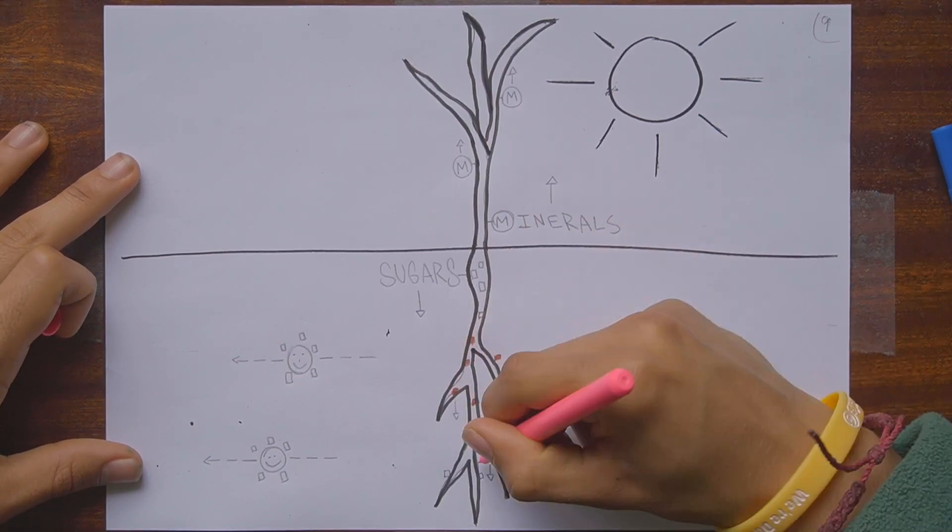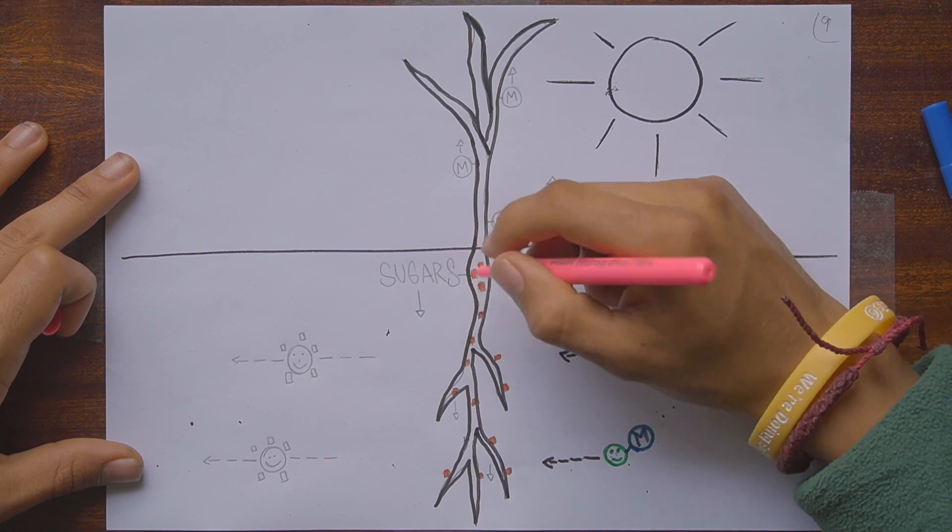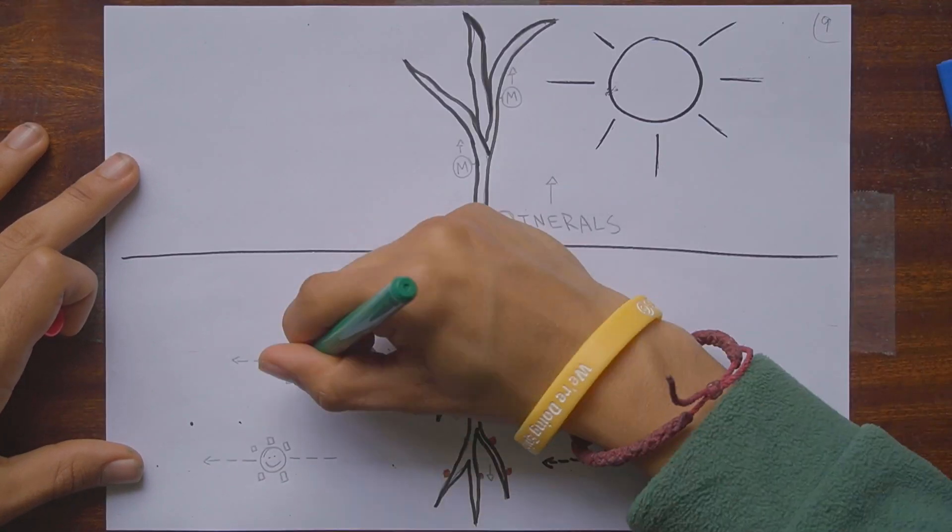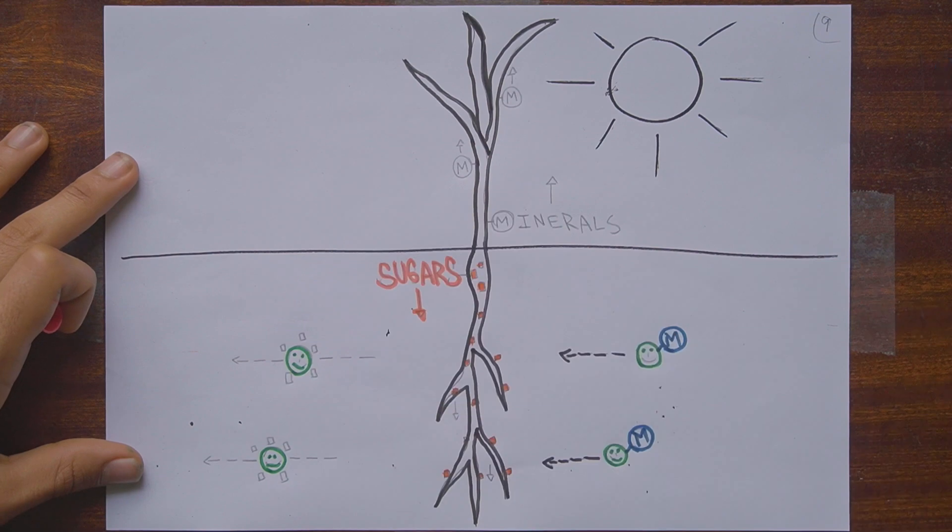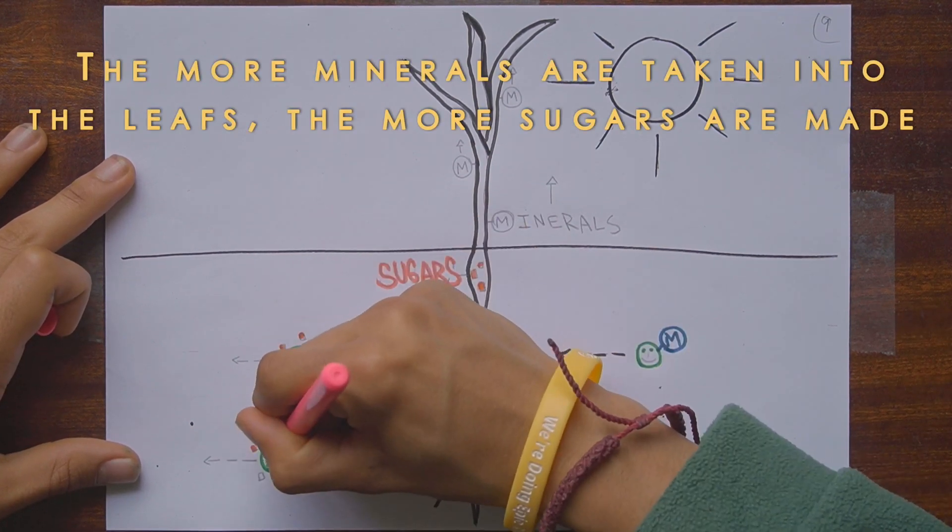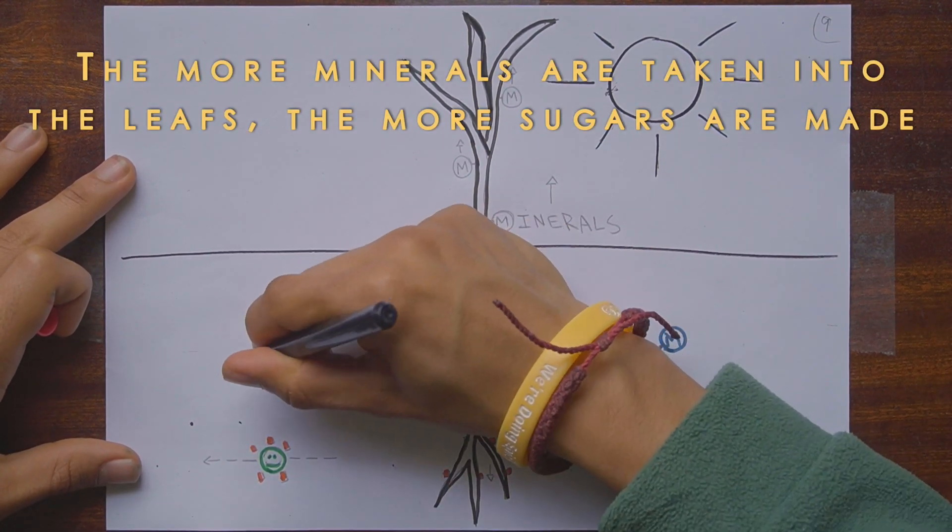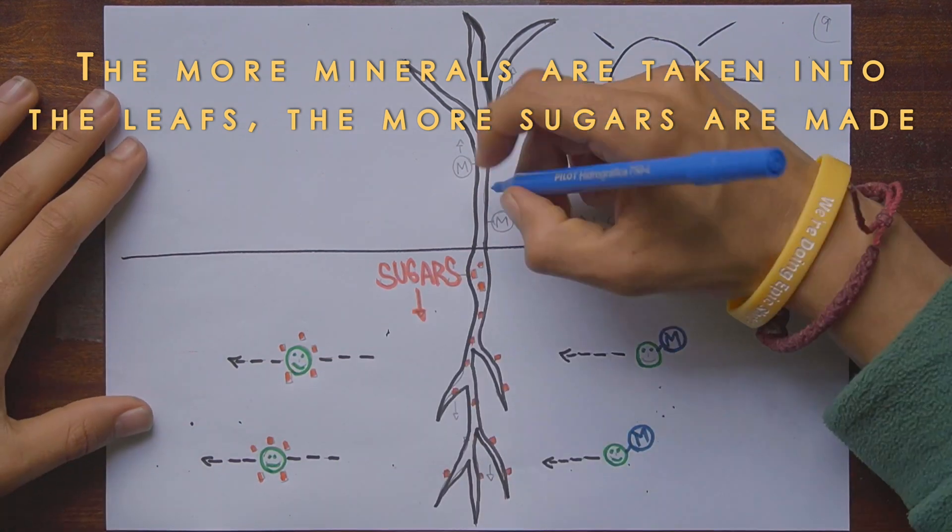The more sugars the plant pumps into the soil, the more minerals the plant will be fed by the fungi, so long as there is available phosphate in the soil to carry the minerals into the plant. The more minerals the phosphate takes into the leaves, the more efficiently the photosynthesis machine is and the more sugars are made.